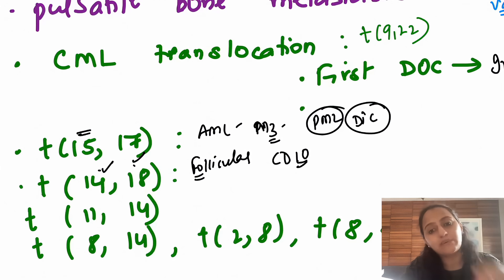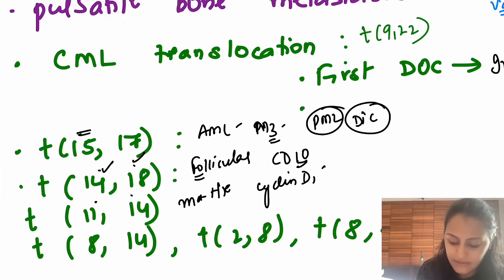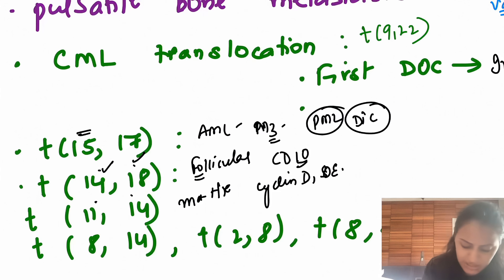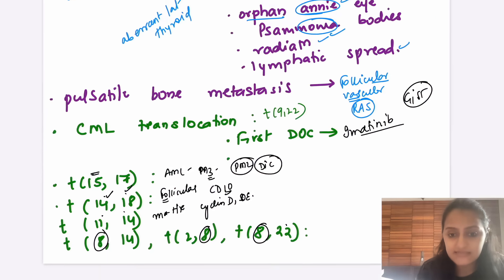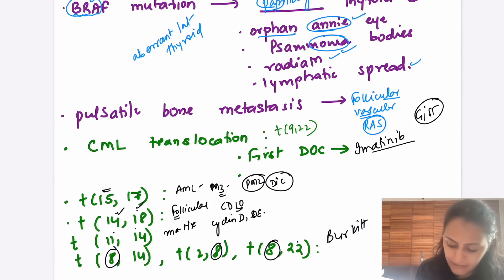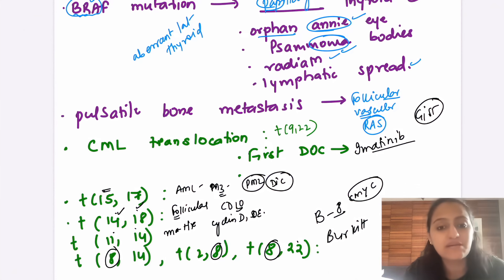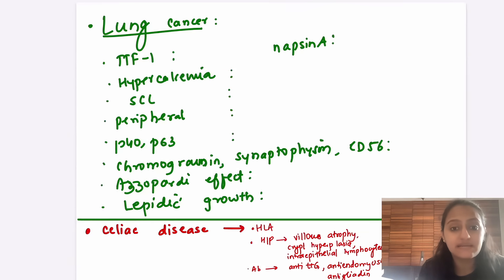Translocation t(11;14) — two siblings 11 and 14 fighting, making the parents go mental — that is mantle cell lymphoma, with cyclin D1 overexpression. Translocation t(8;14), t(2;8), and t(8;22) — all 8s with even numbers — are seen in Burkitt's lymphoma. Chromosome 8 carries the c-MYC gene involved in Burkitt's. Remember starry sky appearance in Burkitt's.